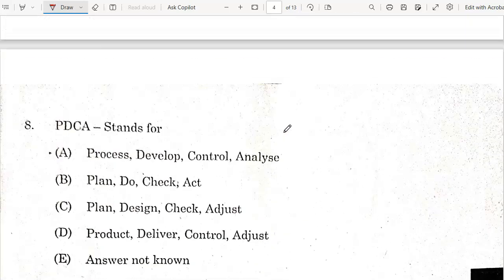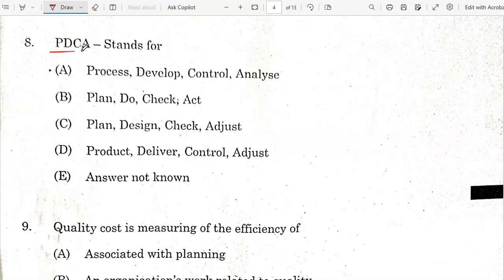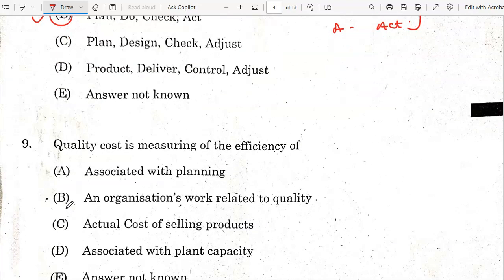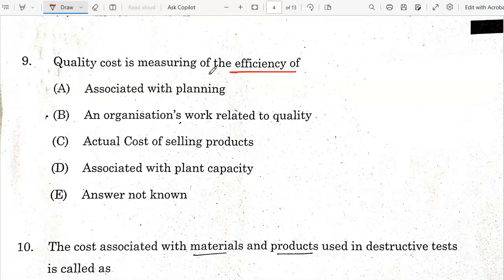Next question: PDCA stands for Plan, D for Do, C for Check, and A for Act. So option B is the correct answer. Quality cost is a measure of efficiency. It is estimation of prevention, detection, and elimination of defects to improve product quality related to the organization's work. So option B is the correct answer.